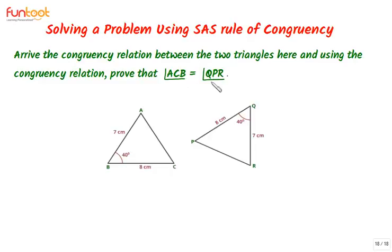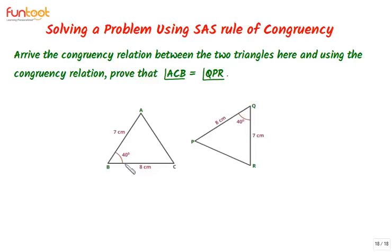We need to prove that angle ACB is equal to angle QPR. In these two triangles, side AB equals side QR equals seven centimeters, side BC equals side PQ equals eight centimeters, and the included angle ABC equals included angle PQR equals 40 degrees.